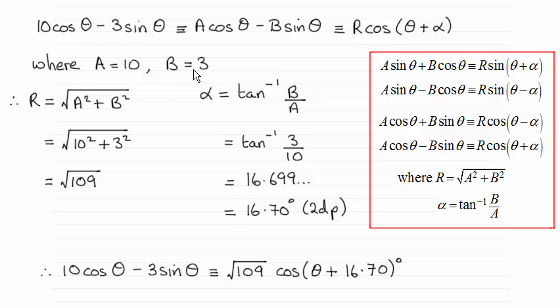It's not negative 3 by the way, just the positive version here. And, working our way through, you can see R turns out to be the square root of 10² plus 3², which is root 109. Inverse tan of b over a gives us 3 tenths.